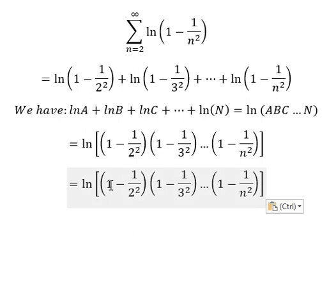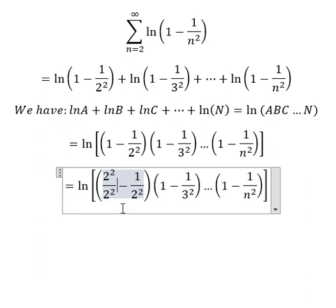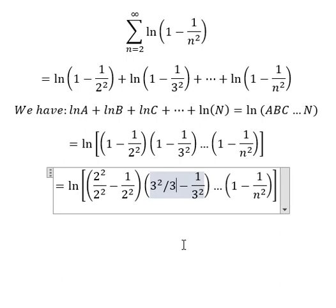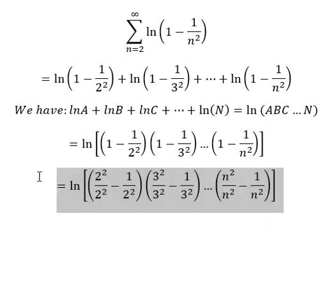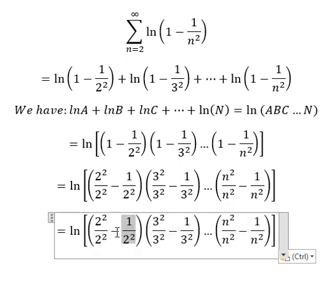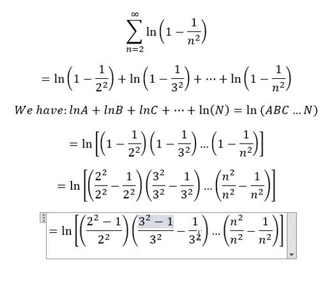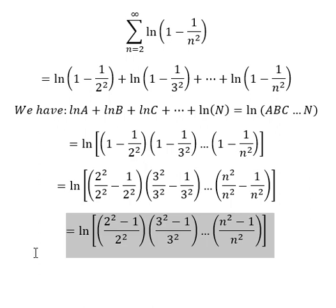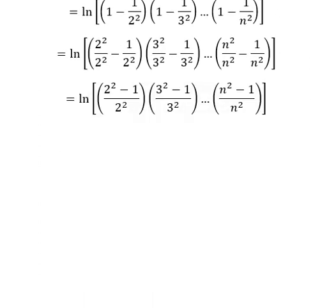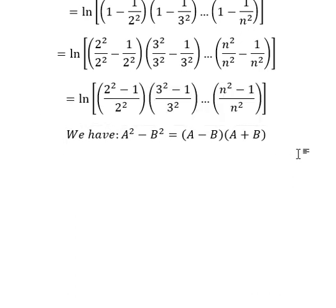So number one, we can change this into a common denominator form — similar for this one. And number one we change to n-squared over n-squared. Now we compile the two fractions here and we have this result, similar for the next terms.